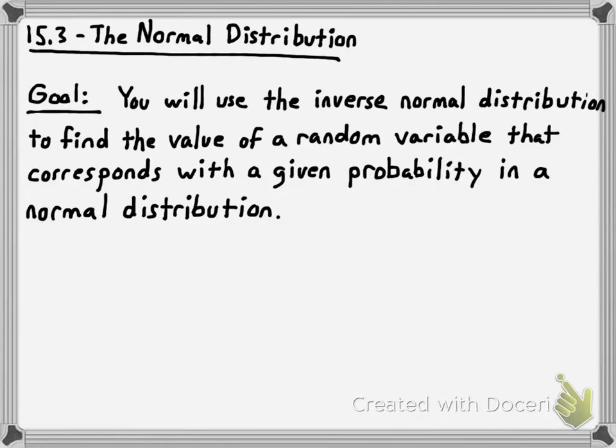So in other words, if I say that 25% of the values are less than a number in a normal distribution, and I give you the mean and standard deviation, you ought to be able to tell me what number it is for which 25% of the values would be lower. Alright, that's the idea.